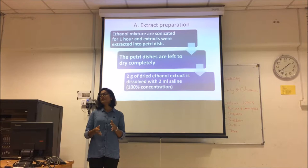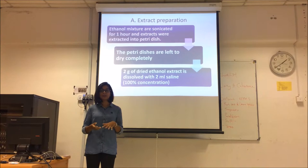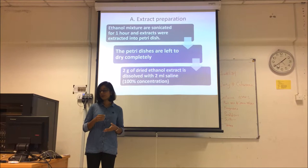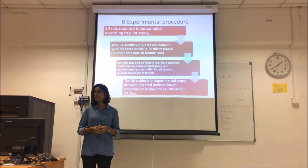This ethanol mixture is then sonicated for one hour. Later, the extracts are filtered into a petri dish using a filter funnel. The petri dishes are left to dry completely. After that, 2 grams of dried ethanol extract is dissolved with 2 ml of saline to achieve a concentration of 100%. All concentrations used in this study are 100%.